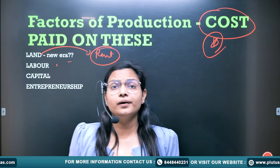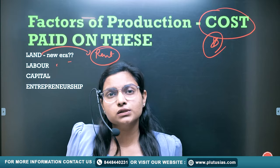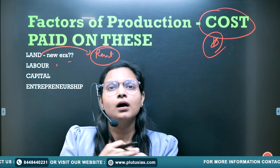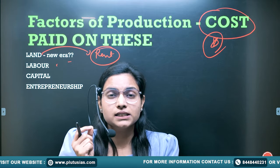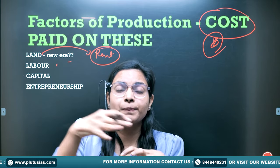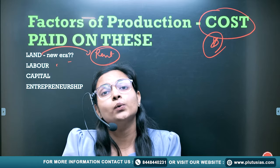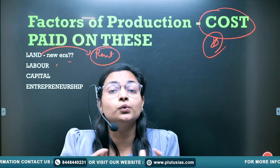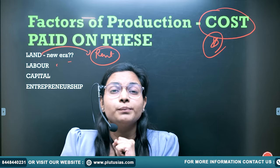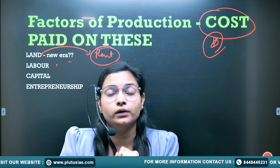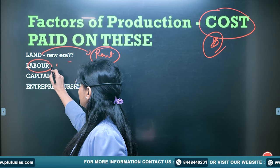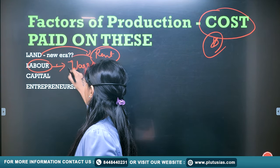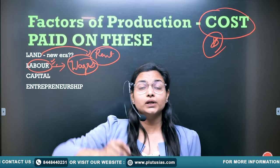In the new era, if we see, there are e-commerce businesses, so it could be an alternative of land. Land is just basically a symbol of the workplace of the organization — it could be a cloud itself. Cloud is also a new land for new businesses. Here, the land is only a metaphor; you have to think broader. Then, the labor — here wages or salaries are being paid to the labor; it is the cost on the labor.